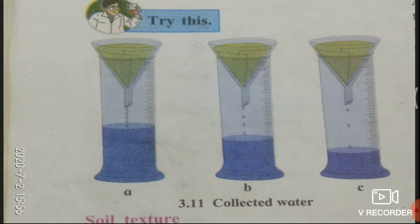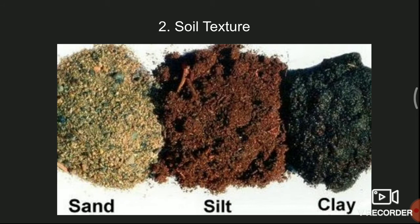The second property is soil texture. Soil texture depends upon the proportion of particles of various sizes in it. According to the texture, the types of soil are identified: sandy soil, silt soil, and clay soil. In sandy soil, the proportion of large particles of sand is more. In silt soil, the particles are of medium size. In clay soil, the proportion of small particles is maximum.